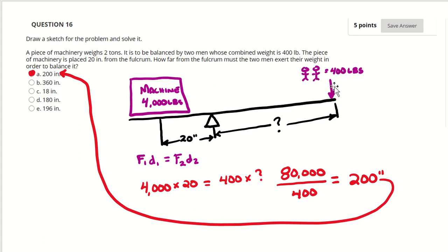It is balanced by two men whose combined weight is 400 pounds. Here's the two men 400 pounds at this end of the lever. The piece of machinery is placed 20 inches from the fulcrum. The center of the machine is 20 inches from the fulcrum.